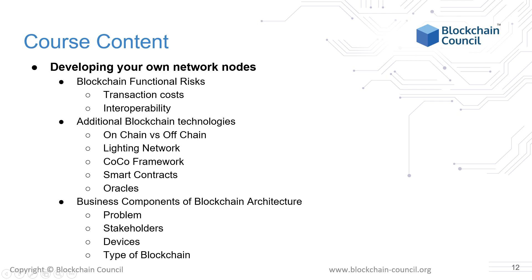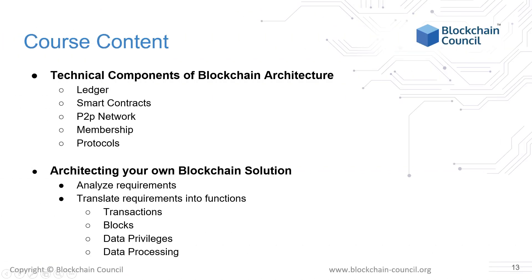We will then cover the business aspect of blockchain using stakeholders in different types of blockchains. After that, we'll move on to the different technical components that make up a blockchain, including the ledger, smart contracts, peers, and protocols. Then, we will be ready to move to the main sections about architecting your own blockchain solution.